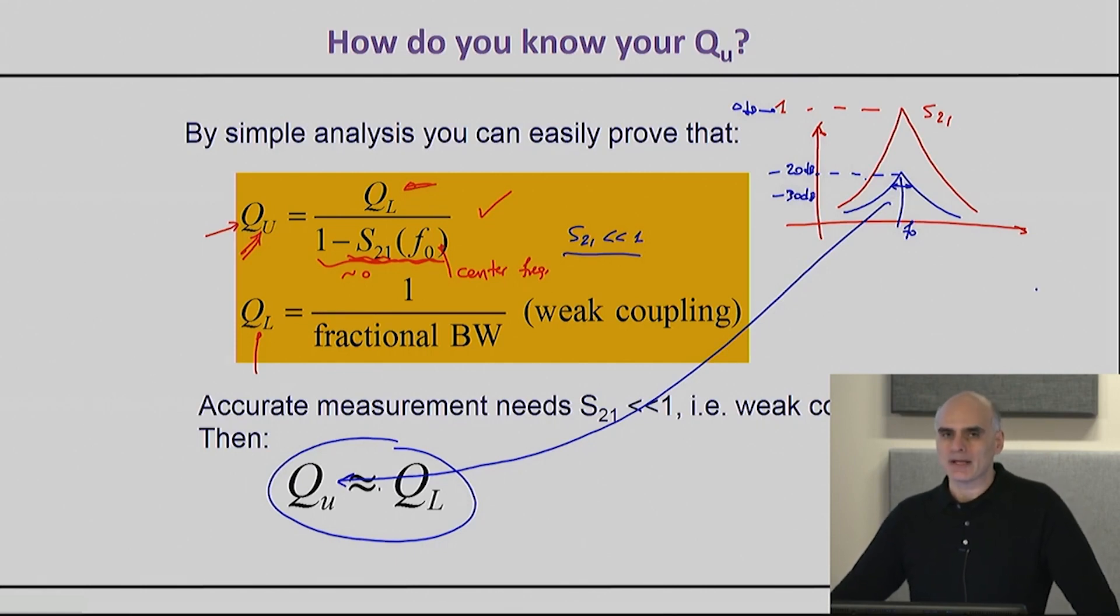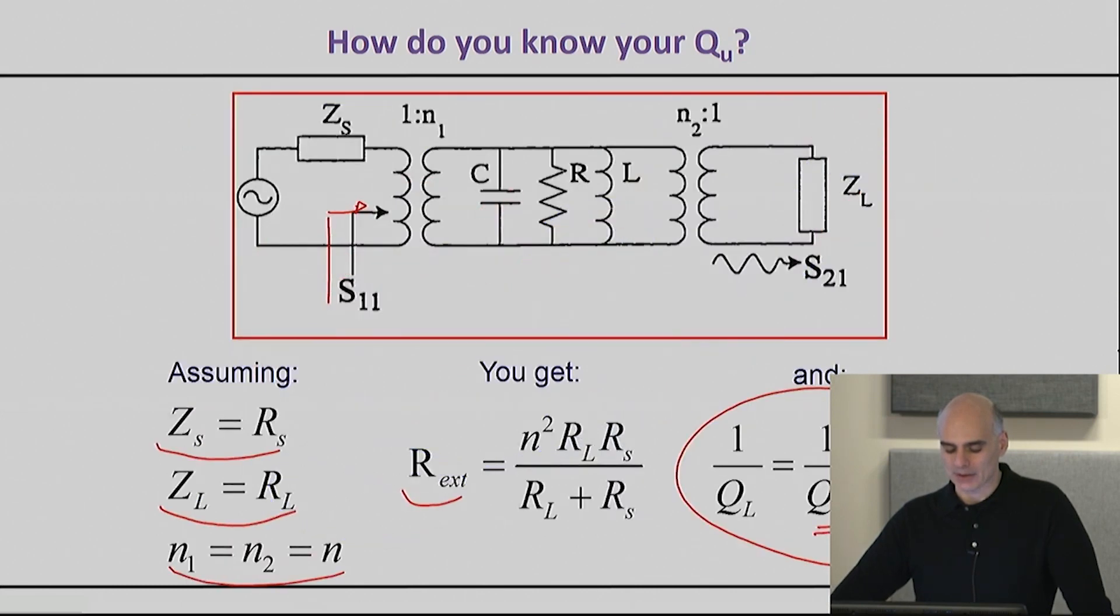Now you may naturally ask, how exactly do I achieve that? How exactly do I achieve my S21 to be much less than one? Well, the way you achieve that is by designing this circuitry to have weak coupling. Let me go back to the circuitry so I can show you this—see, you're the one who is choosing these numbers. You're the one that decides how much energy you couple from the input to the resonator.